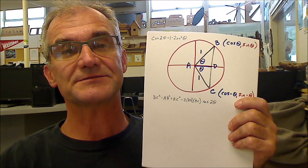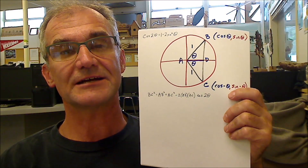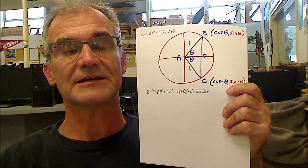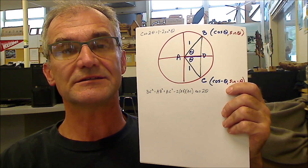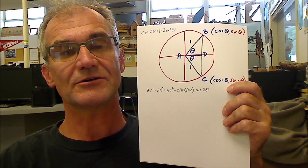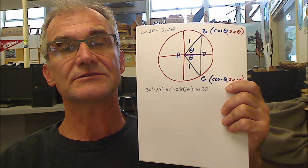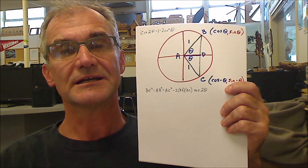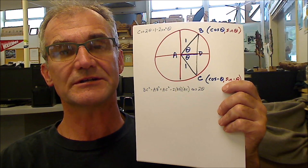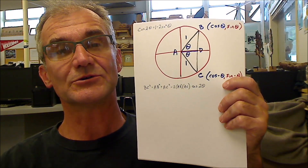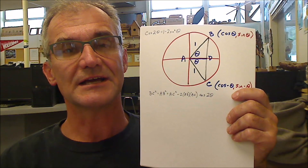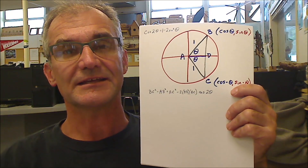Hey, Jonathan here at Colfax Math. Today I'm going to go over the derivation of the double angle identities in trigonometry. These are a little hard, and I'm going to go over why cosine of 2θ is equal to 1 minus 2 sine squared of θ. It's a really cool derivation and it'll make sense when you see how it came about.